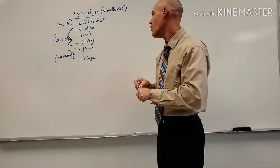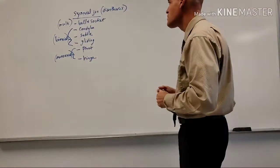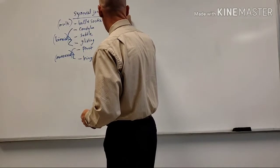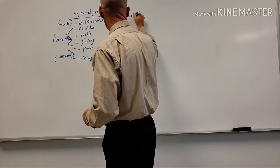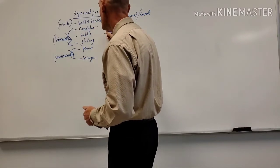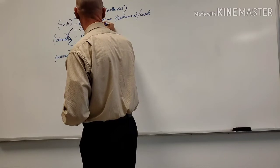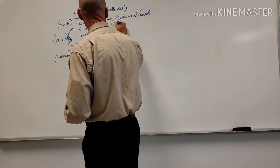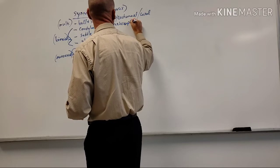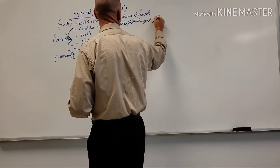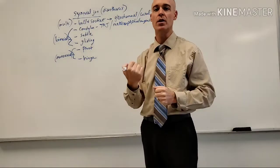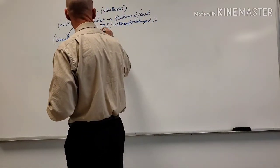For the ball and socket, the examples are the shoulder and the hip: the glenohumeral joint is the shoulder and the coxal joint is the hip. A condyloid joint — a good example is the TMJ, but also the metacarpophalangeal joints, or MCPs — these are also condyloid joints.